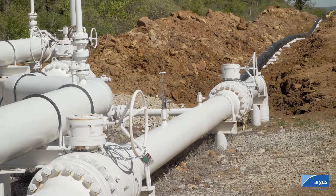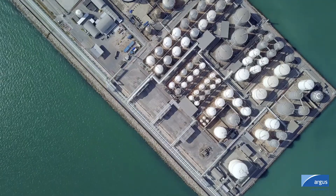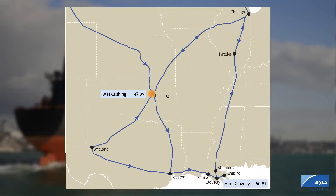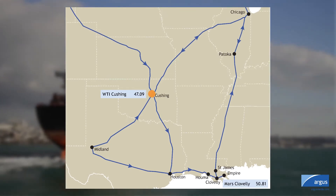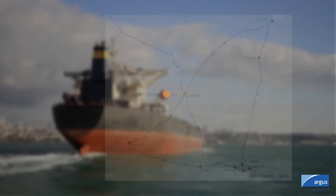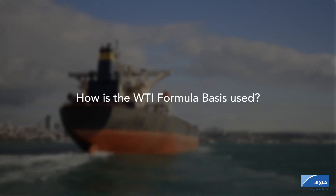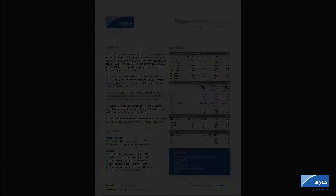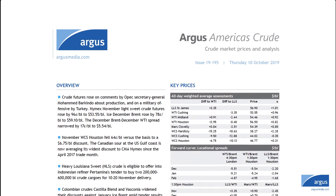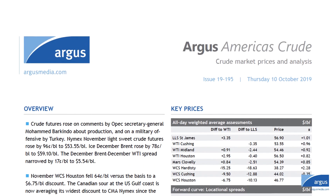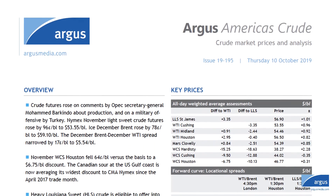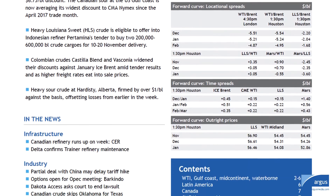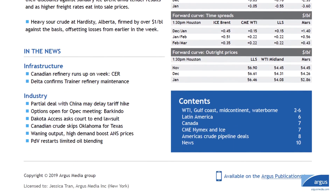The Argus WTI Formula Basis represents the outright price at Cushing that is used as the basis for pricing all other Argus Gulf Coast physical crudes. Outright prices for all Argus assessed physical crudes in the Gulf Coast are calculated by adding a market traded differential to the Argus WTI formula outright price.